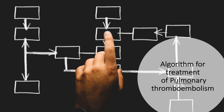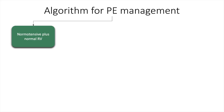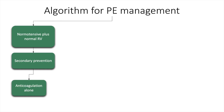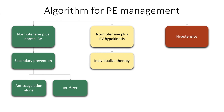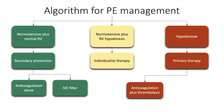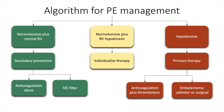The treatment of pulmonary thromboembolism depends upon the clinical condition of the patient. If normotensive with a normal right ventricle, anticoagulation alone or an IVC filter may suffice. If normotensive but with right ventricular hypokinesis, treatment needs to be individualized. If the patient is hypotensive, anticoagulation and thrombolysis may be required, and possibly embolectomy — either catheter-directed or surgical.